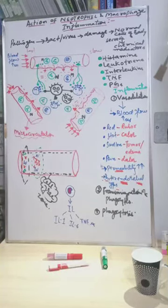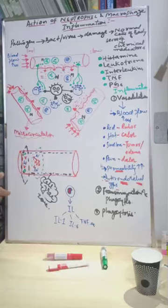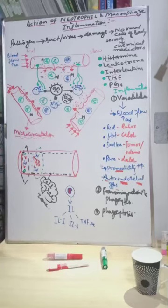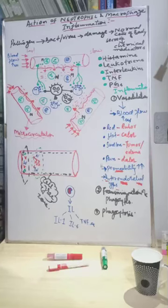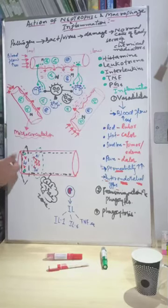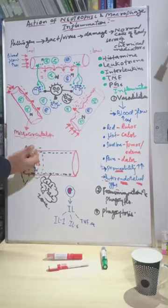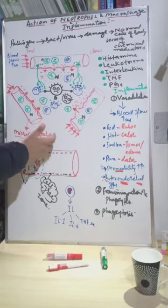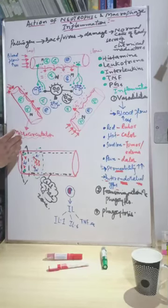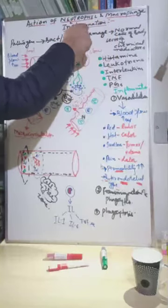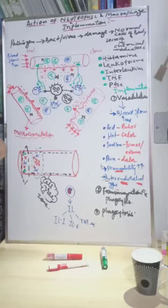Assalamualaikum students, this is Rifan sir. We are discussing the immune system — specifically innate immunity. We've already discussed the first line of defense and one component of the second line of defense: phagocytic barriers involving neutrophils and macrophages, with macrophages being the main player. Today we will discuss the action of neutrophils and macrophages, along with the very important topic of inflammation.